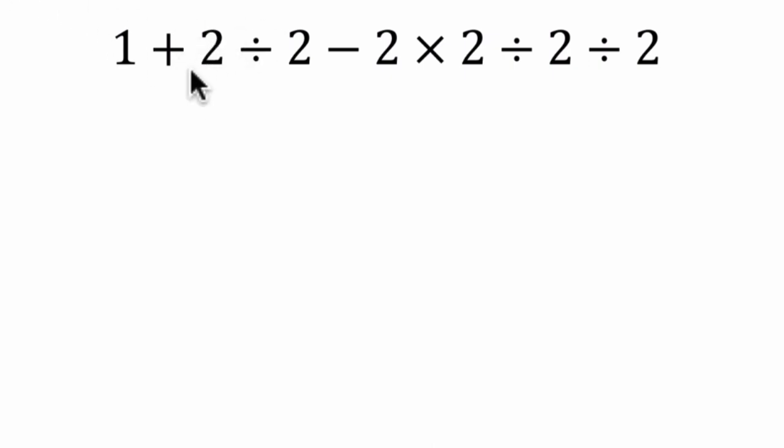So what I'm going to do is, I see this division pair right here, I'm going to work with this first and I'm going to rewrite everything else. We have one plus two divided by two is just one. If you have two things, and you divide them in two groups, each group just has one item.